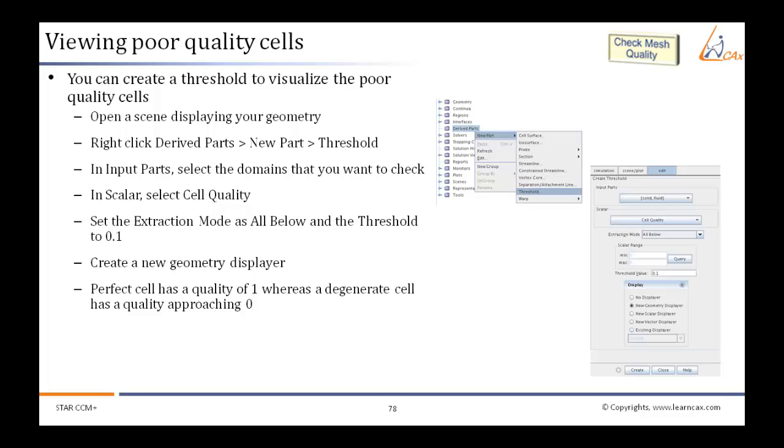Create a new geometry displayer. Perfect cell has a quality of 1, whereas a degenerate cell has a quality approaching 0. Poor cell quality is likely to affect both the robustness and accuracy of the solution.